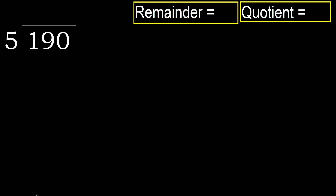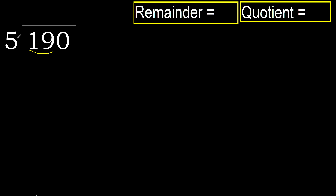190 divided by 5. 1 is less, therefore next. 19 is not less, therefore 19. With 19.